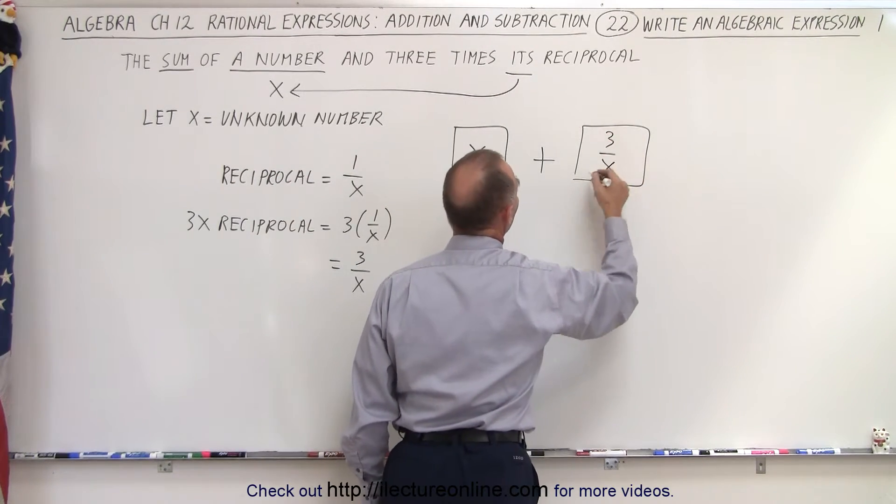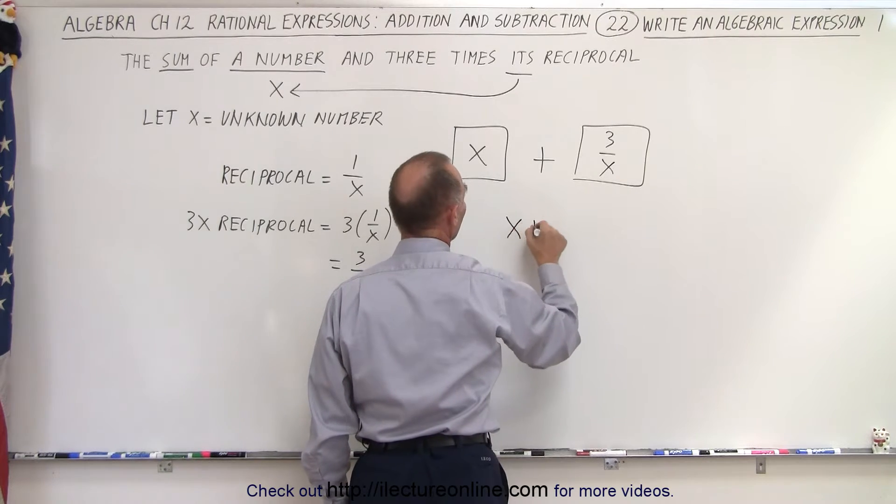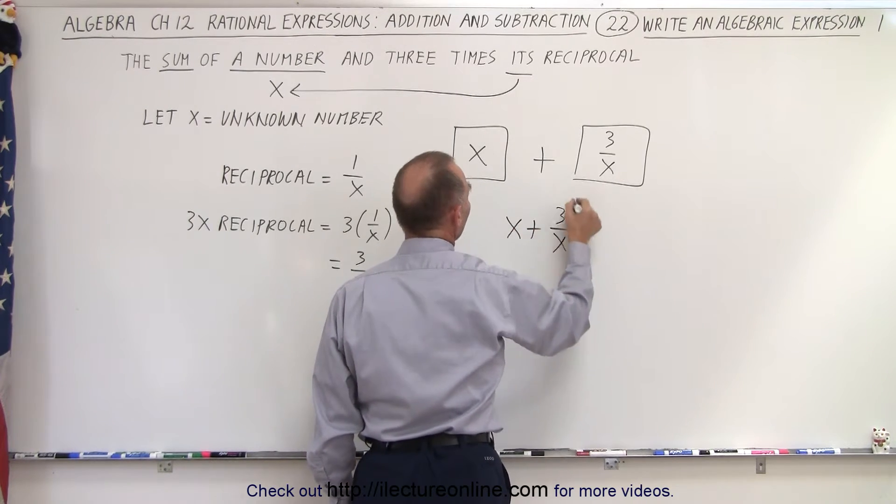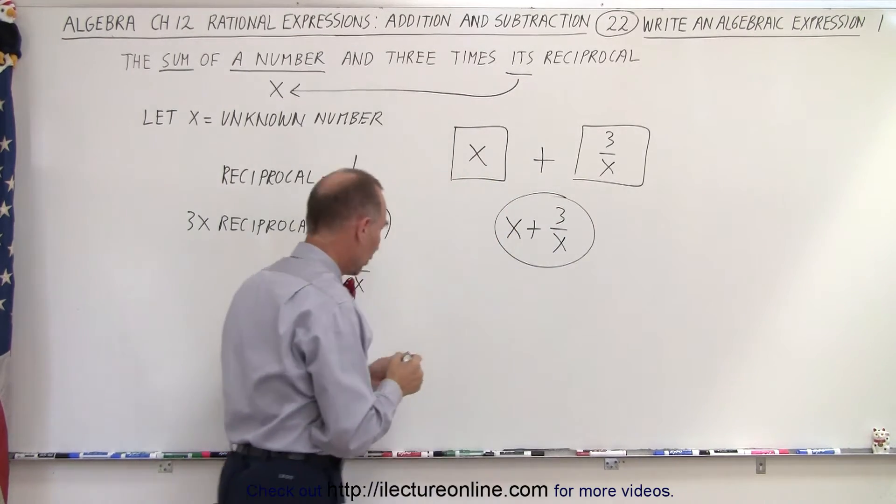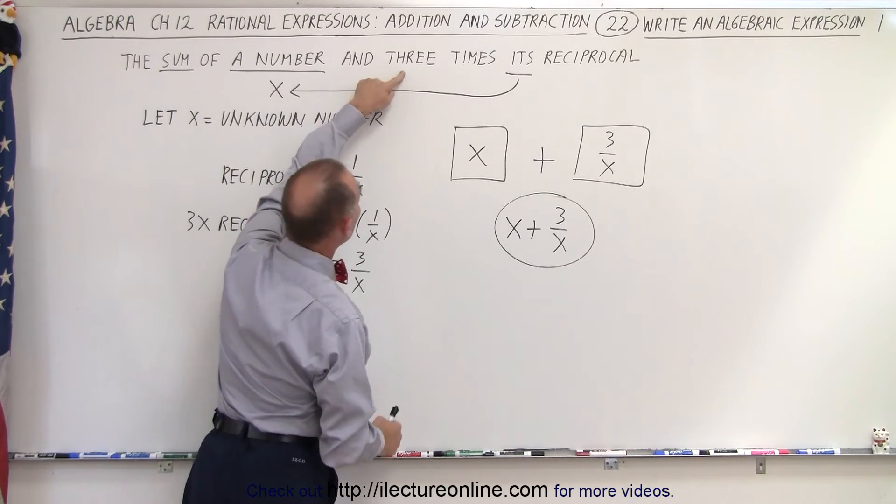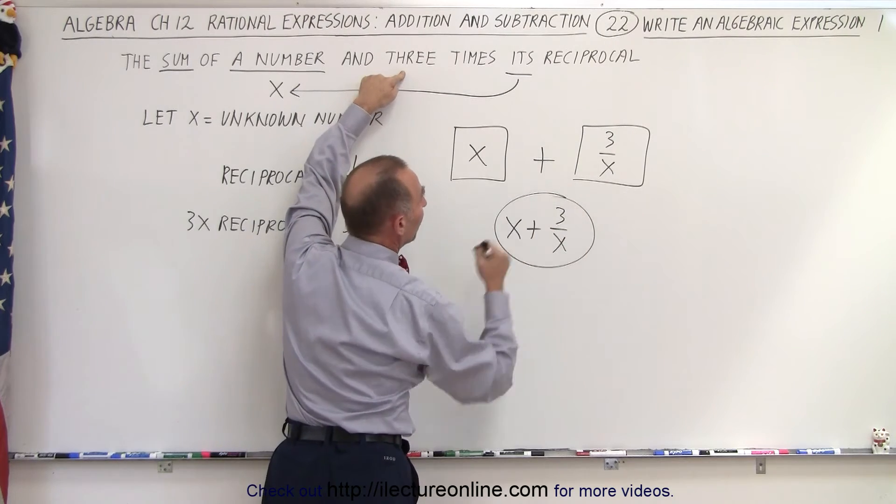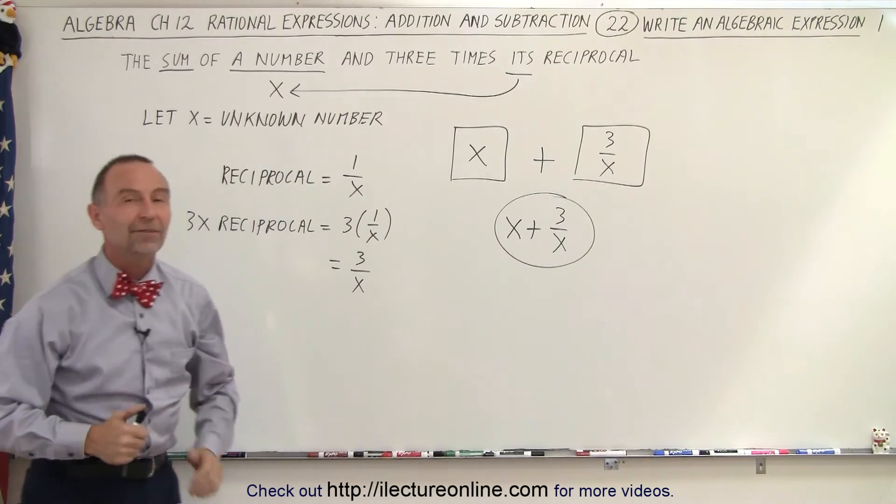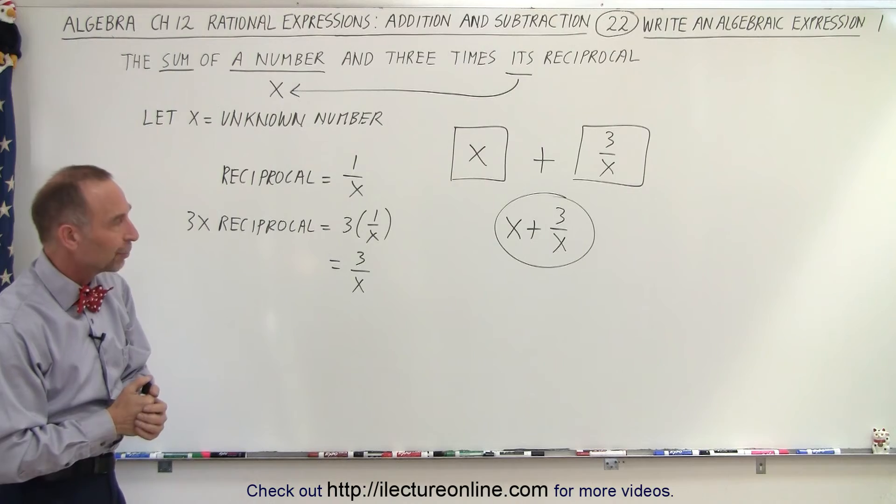So we write that over here, and the expression becomes X plus three over X. This is what we're looking for: the sum of an unknown number X and three times its reciprocal. And that is how we find the algebraic expression.